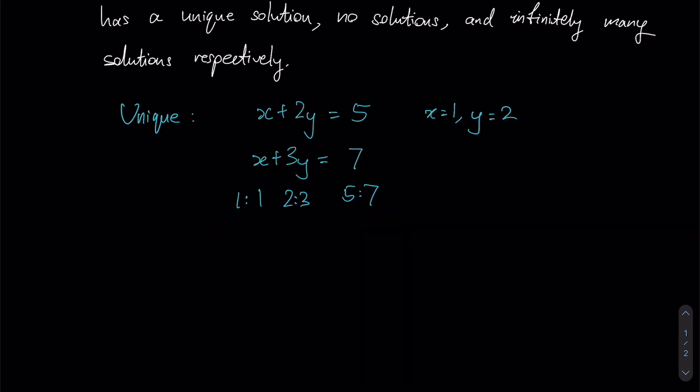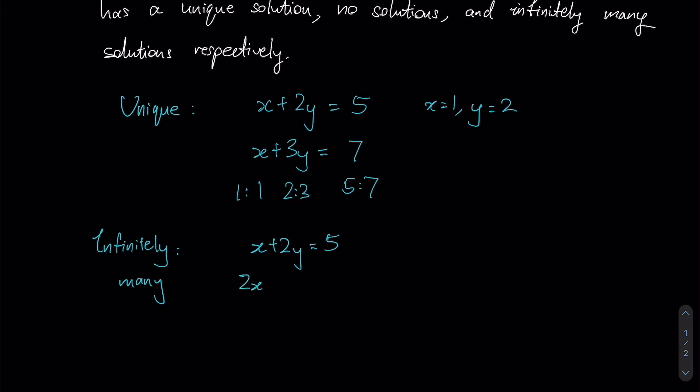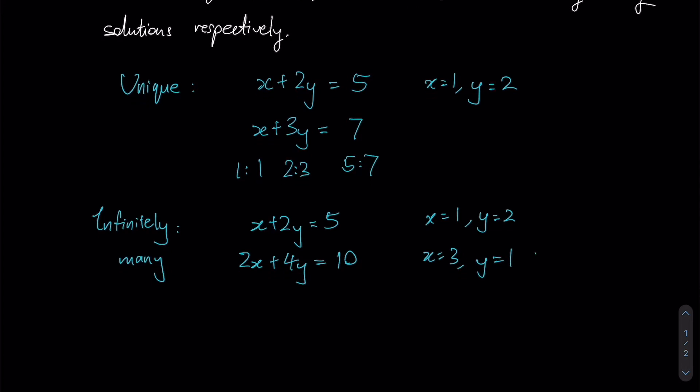Let's take a look at infinitely many solutions. If we are presented with the same first equation and we were presented with a second equation of the form 2x + 4y = 10, can you see that you will be able to obtain various sets of values for x and y?